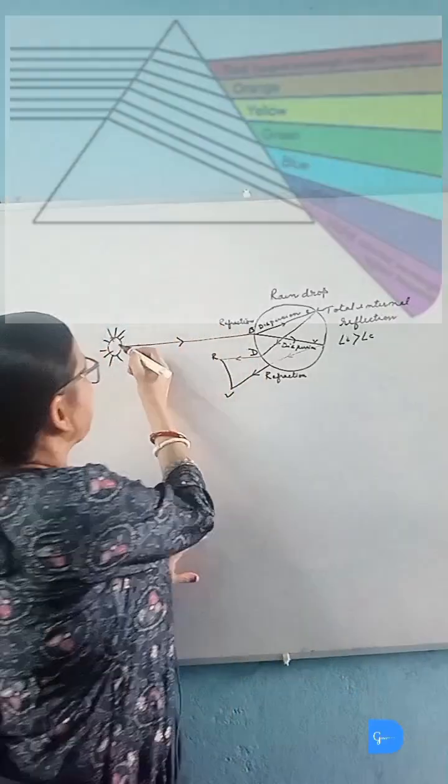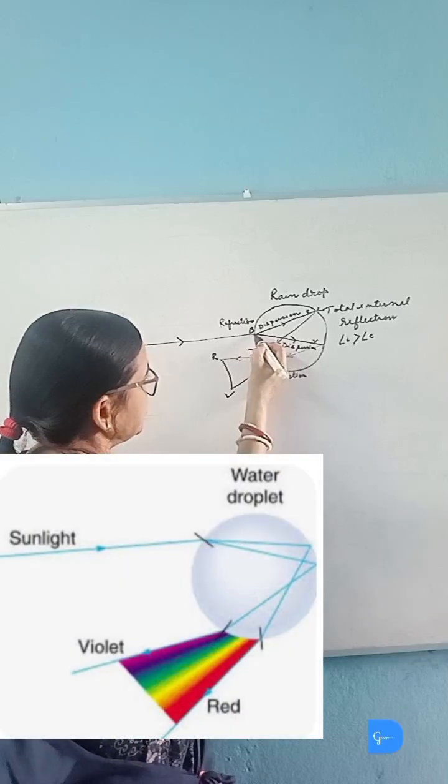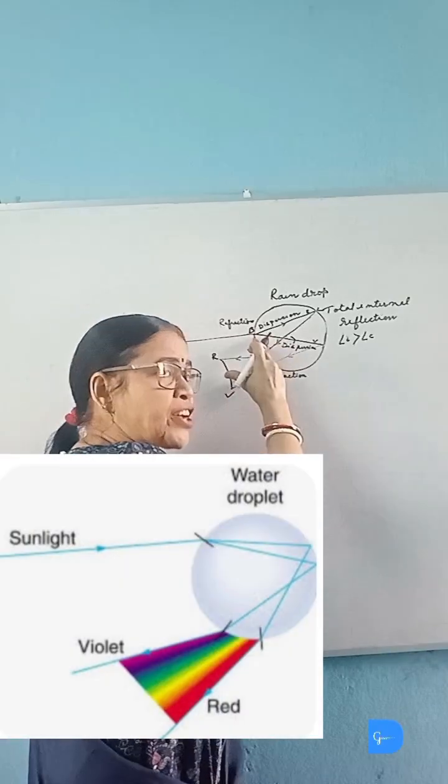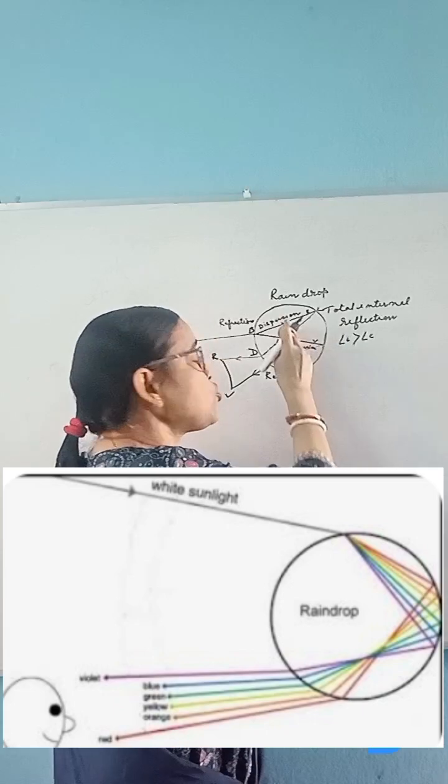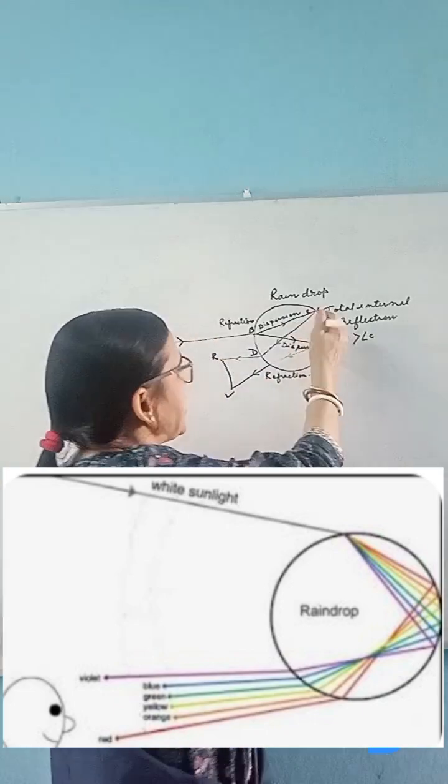Now when a ray of light is incident on this raindrop, it undergoes refraction and produces a spectrum of seven colors inside the raindrop due to dispersion of light.